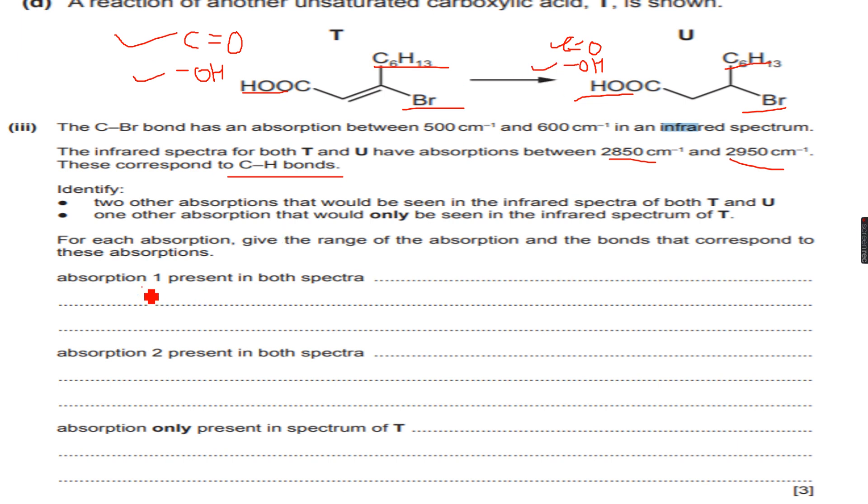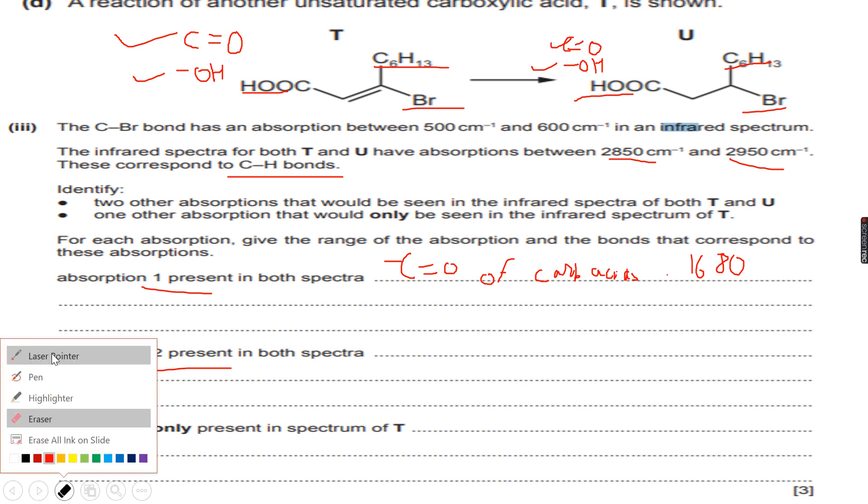These can be our absorption 1 present in both spectra and absorption 2 present in both spectra. So CO of carboxylic acids, I am going to write carb acids to make it quicker, but you will write the full thing. CO of carboxylic acids and if you look at the data booklet, this is between 1680 and 1730 per centimeter.